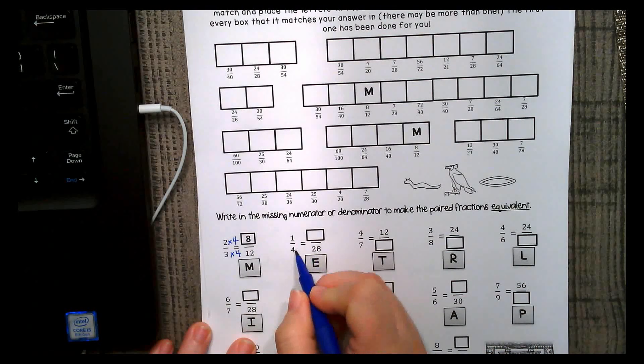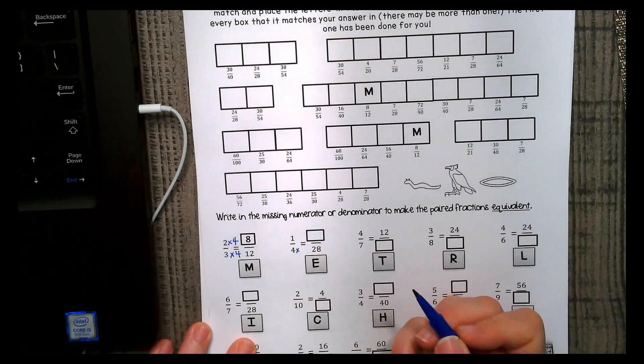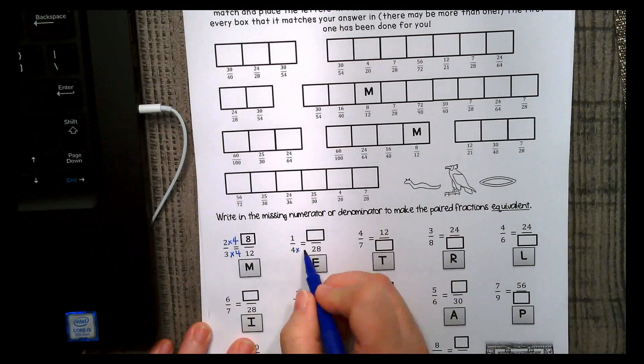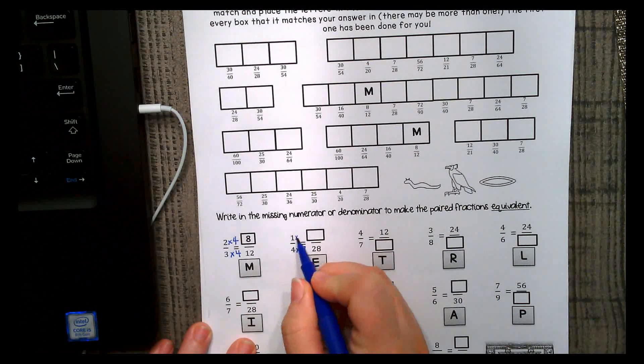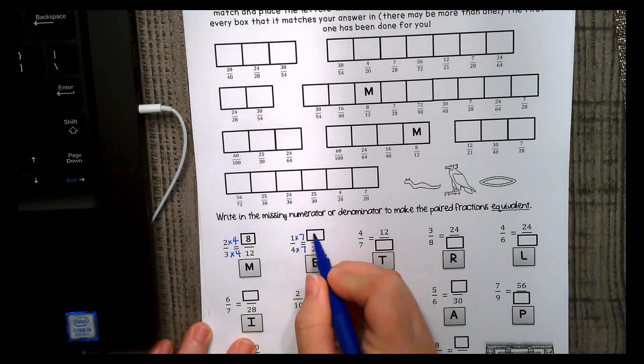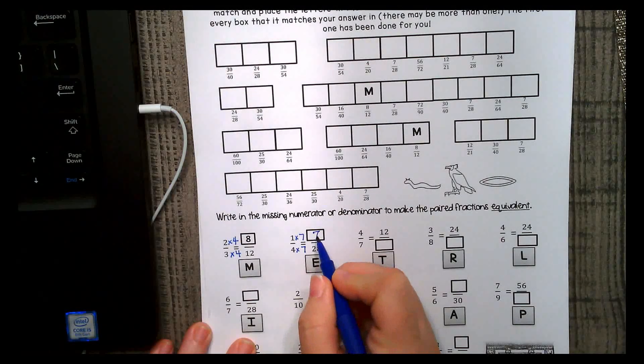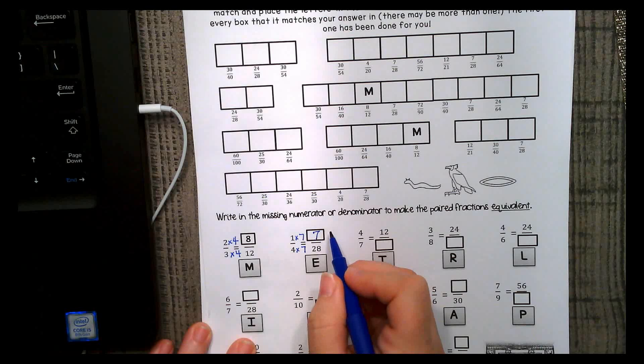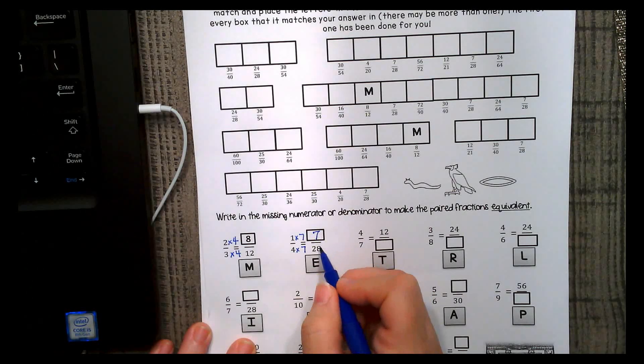All right, so what times 4 is 28? That's right, 7. So 1 times 7, because whatever you do to the bottom, you have to do to the top, is 7. So 1 fourth is equivalent to or equal to 7 28ths.